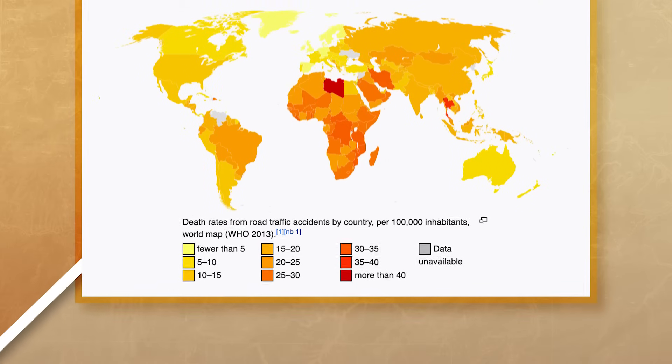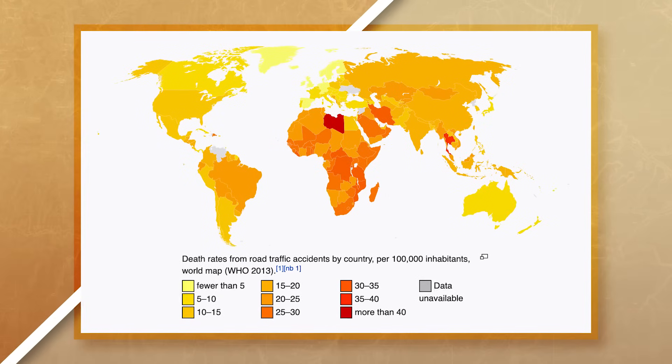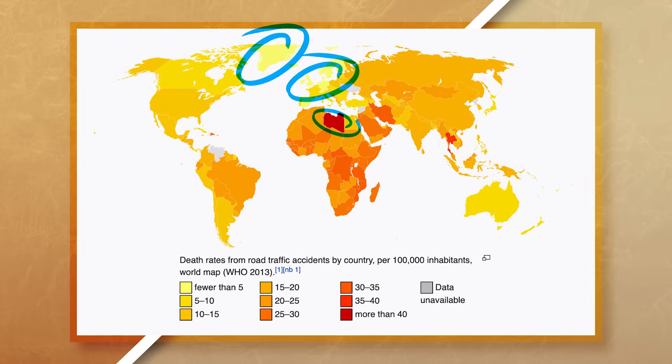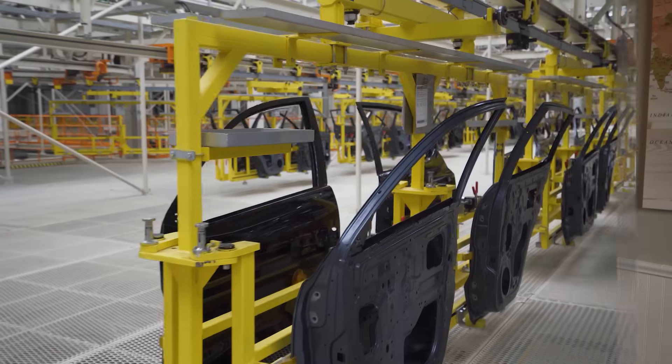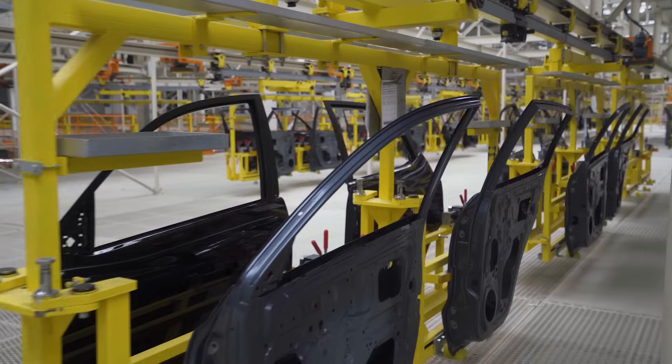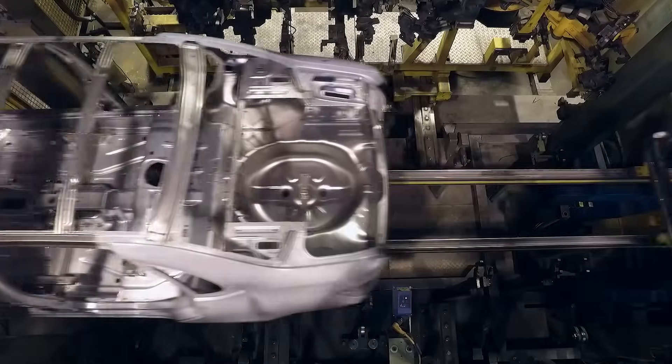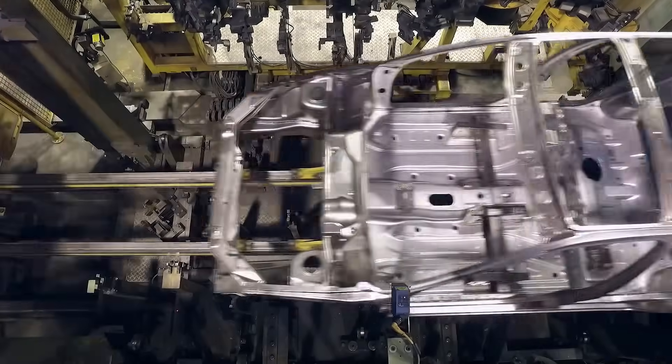Let's start with governments. Let's say that you work in your city's local government and you've been tasked with trying to reduce traffic-related deaths in the city. The first thing you could do is start by looking at a global scale to see which countries have low traffic-related deaths and which have higher traffic-related deaths. You could check which policies and safety standards around the world are most effective and look to see how you could implement those policies into your own city.